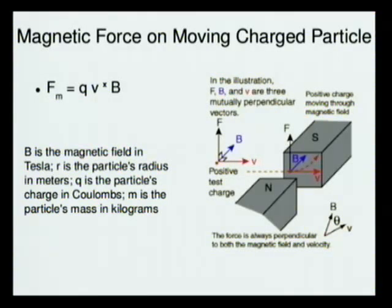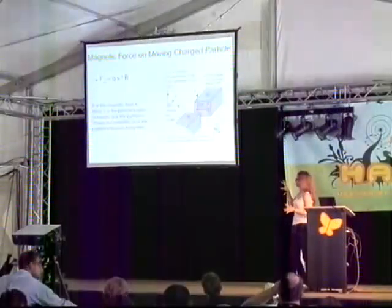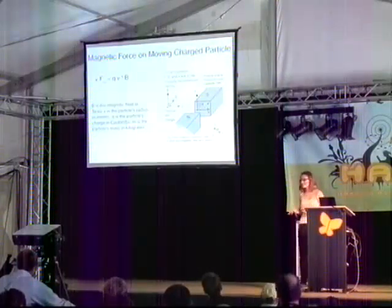So just a bit more on the QV cross B. If you have a charged particle that's moving at a non-zero velocity inside a magnetic field, there's a force that acts on it, and that force is given by Q — which is the charge in Coulombs — times the velocity vector, crossed with B, which is the magnetic field. The cross product is not just a simple multiplication; it takes into account the vectors.